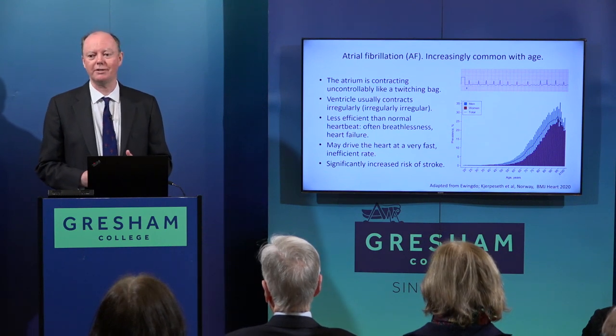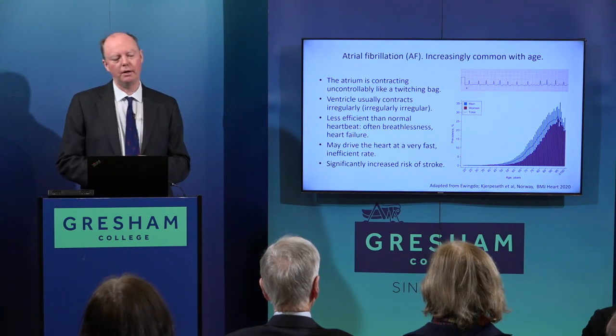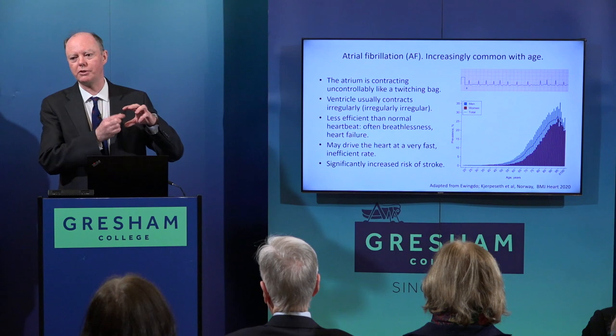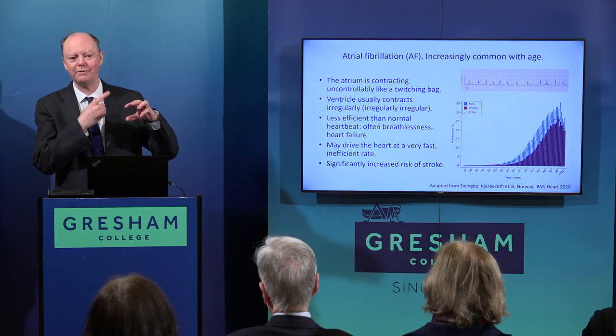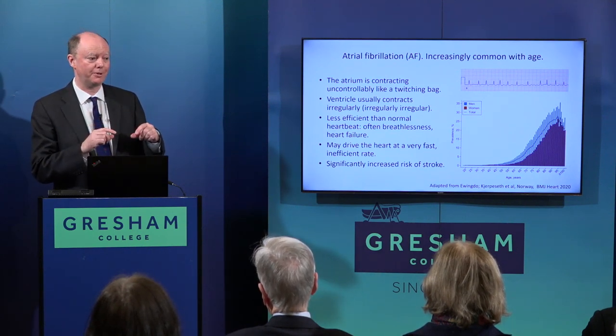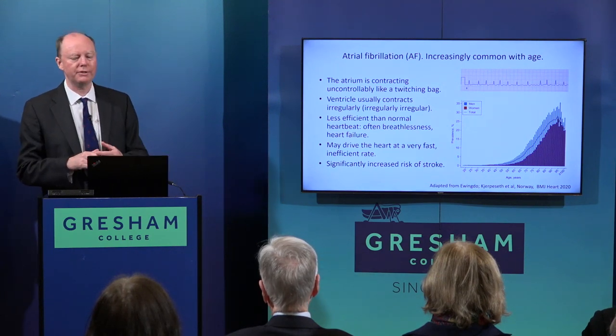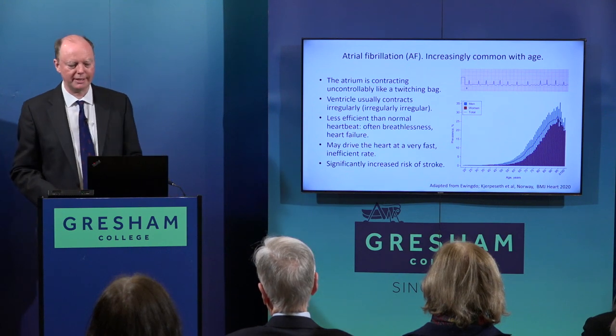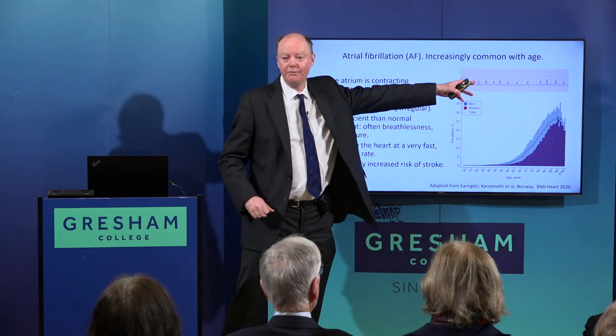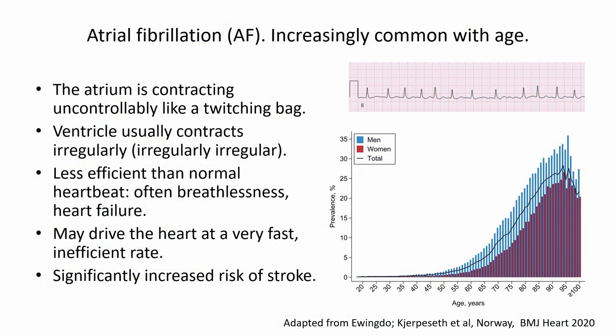There's a third issue with atrial fibrillation: this twitching allows clots to form in the atrium, and if clots flick off into the circulation the thing you really worry about is stroke. Atrial fibrillation, if not treated with blood thinners, increases stroke risk quite significantly. The ECG looks very irregular with no visible P waves, because the atrium is just twitching. This graph shows that men get AF a bit earlier than women; by age 100 it's still only about a third of people, but it becomes much more common in your 80s and 90s — it should be seen as one of the phenomena of ageing.